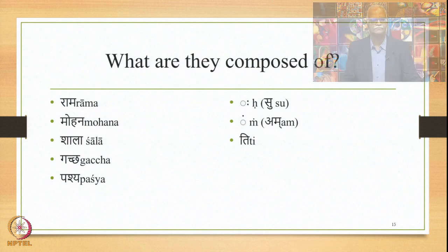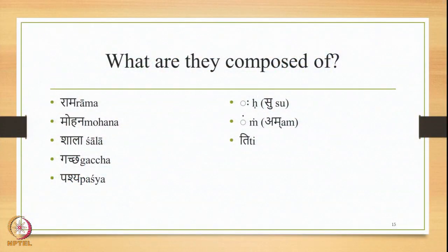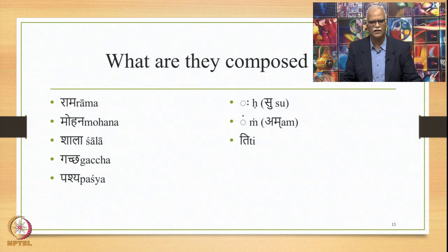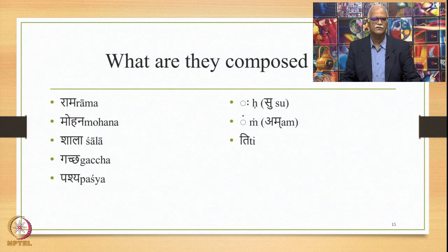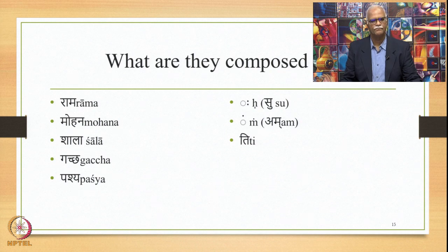Further, we can ask: what are these Padas composed of? Applying the same principle of Anvaya and Vatireka: Rama, Mohana, Shala, Gatcha, and Pasha on the left-hand side; and Aha or Visarga — called Su by Panini — M or Am by Panini, and Ti by Panini on the right-hand side. These are the constituents of these sentences. So these six sentences are composed of five elements on the left-hand side and three elements on the right-hand side.